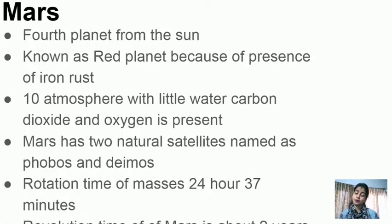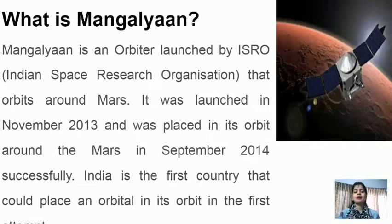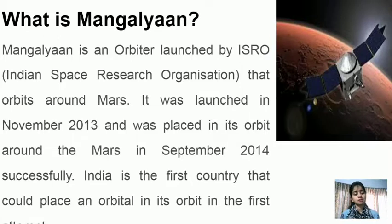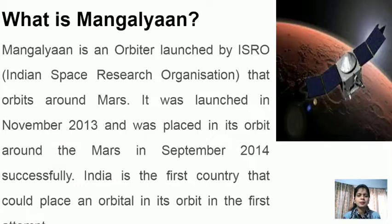Mangalyaan is an orbiter launched by ISRO (Indian Space Research Organization) that orbits around Mars. It was launched in November 2013 and was successfully placed in Mars' orbit in 2014. India is the first country to place an orbiter in Mars' orbit on its very first attempt. The mission aims to gather information about whether life exists on Mars and what elements are present there.